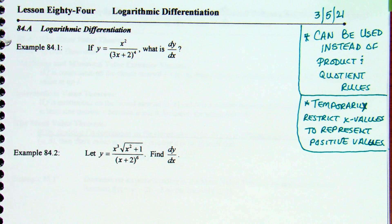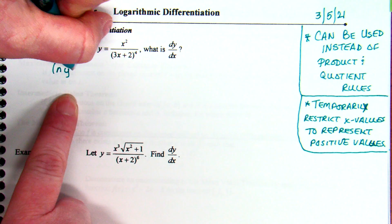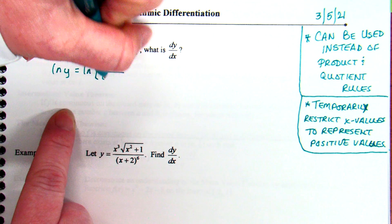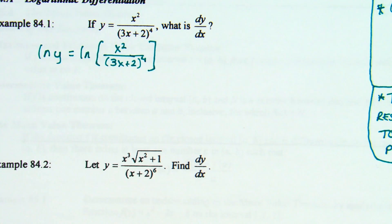First step: I'm going to take the log of both sides. So I'm going to rewrite this as the natural log of y equals the natural log of x squared over (3x + 2) to the fourth, all of that inside the natural log. Division inside a log becomes two logs being subtracted.